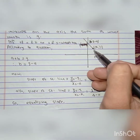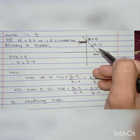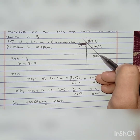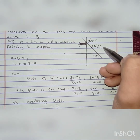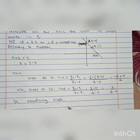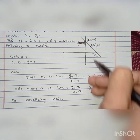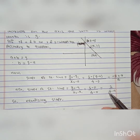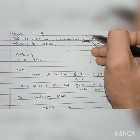Now we calculate the slope again using the other two coordinates: (a, 0) and (4, 1). Using the same formula, (y₂ - y₁) / (x₂ - x₁) = (1 - 0) / (4 - a) = 1 / (4 - a). Since both slopes are of the same line, the slope must be equal, so we can equate them.